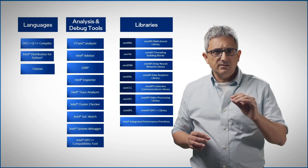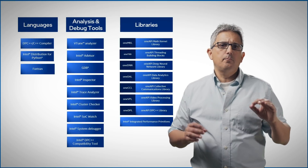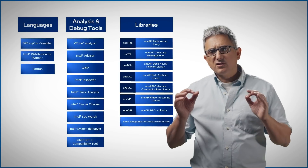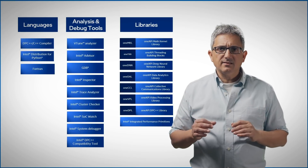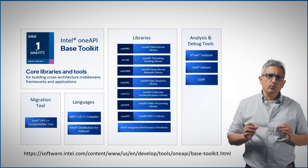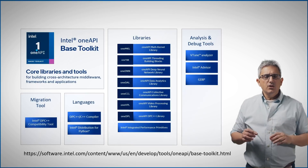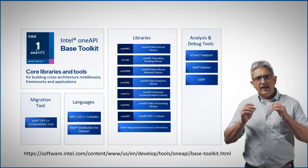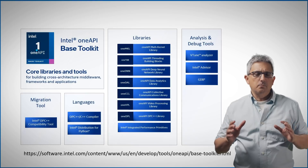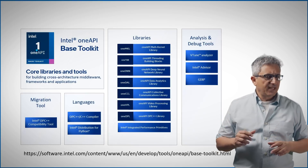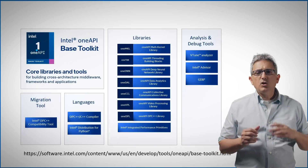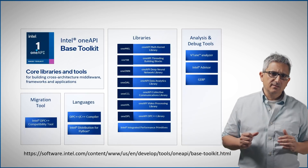For convenience, all these components are packed and brought to you in toolkits for specific domains and usages. For example, this is an Intel OneAPI base toolkit — you can find here everything you need to get started. The libraries cover math, task parallelism, artificial intelligence, video processing and many other domains.